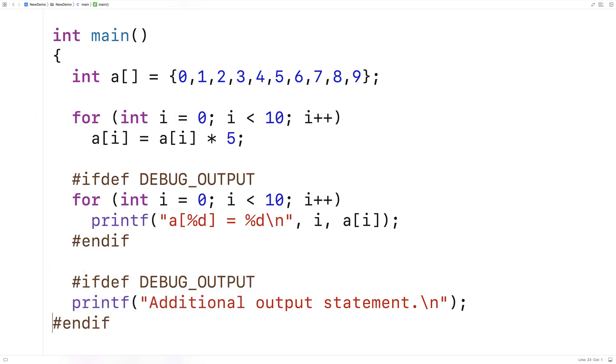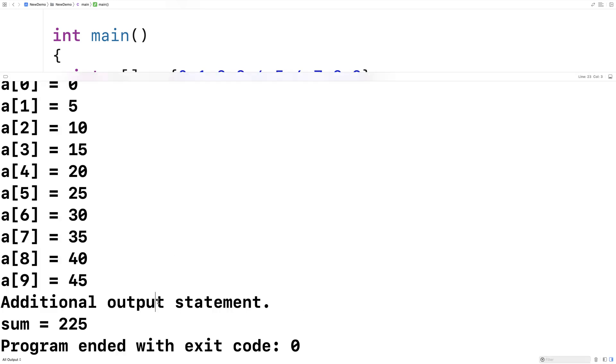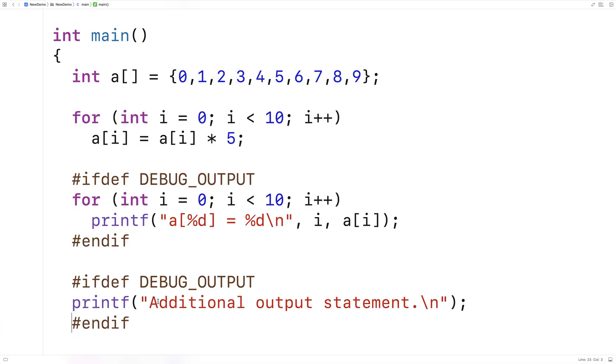We'll have our endif directive as well. Now if we save this and run it, we're going to get the additional output statement being output because DEBUG_OUTPUT is defined. We could use this technique in multiple places in our program.